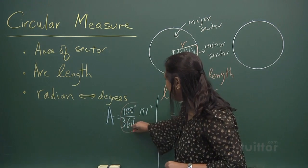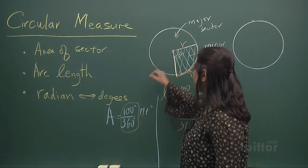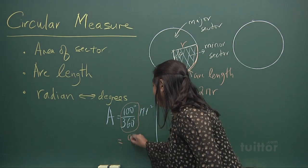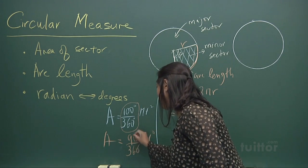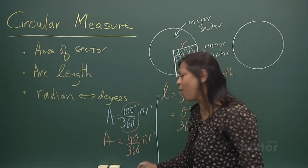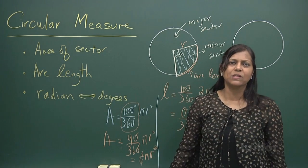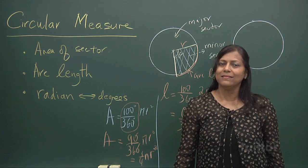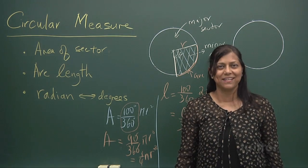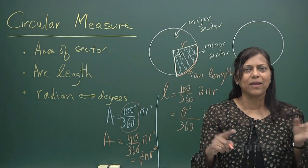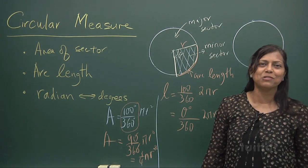If it's a sector, it's a part — a fraction of that circle. If it's 90 degrees, it's 90 over 360 times πr². Cancel: nine over thirty-six is one over four, so you get a quarter πr². These formulas are using degrees. What happens if the angles are given in radians? I'm going to teach you how to derive that very special formula.